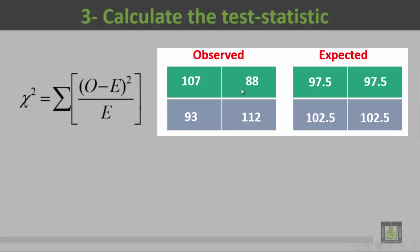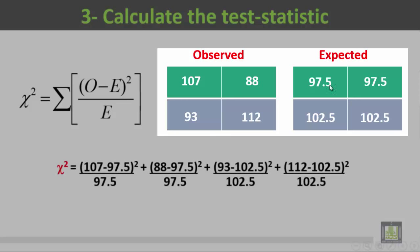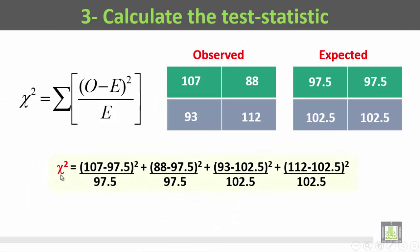B observed is 88 while B expected is 97.5. C observed is 93 and C expected is 102.5. D observed is 112 and D expected is 102.5. Now we are going to apply the equation.